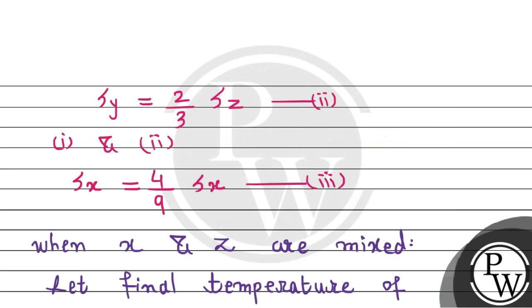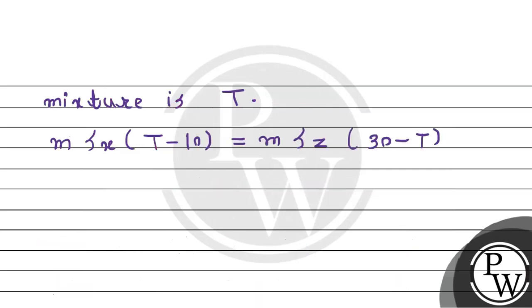Now from equation 3, S of X equals 4 by 9 times S of Z. So we substitute this here. M will cancel out. Here we get 4 by 9, and S of Z will also cancel out. T minus 10 equals 30 minus T. So further simplifying, 13 T by 9 will be equal to 30 plus 40 divided by 9. So after simplifying and solving, temperature comes out to be 23.8 degree Celsius.